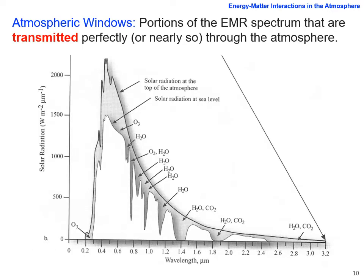This diagram has wavelength in micrometers on the x-axis and solar radiation on the y-axis. The darker color shows solar radiation at the top of the atmosphere, and then the solar radiation that's going to be transmitted through to sea level. You can see where the different constituents of the atmosphere — ozone, water, and CO2 — tend to absorb at which wavelengths.